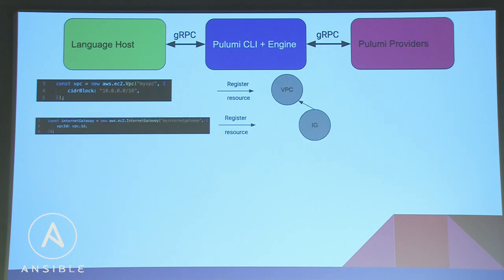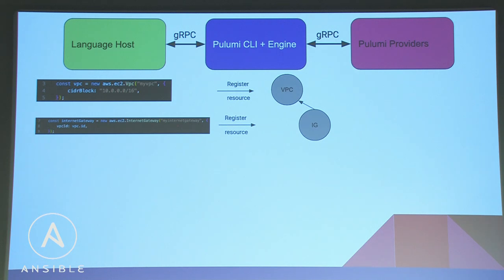When we create a second resource and refer to the ID of the VPC on line 8 — the VPC hasn't actually been created yet at that moment. That ID isn't the actual value. You can really look at it as a bucket where the engine will later put the actual value. By passing that bucket from one resource to the other, you create a link and a vertex in the directed acyclic graph — meaning the internet gateway depends on the VPC.